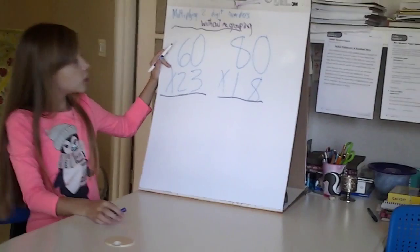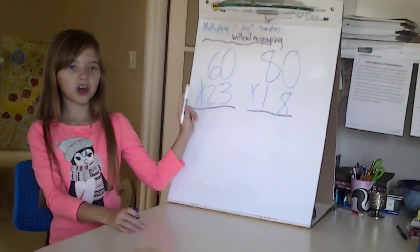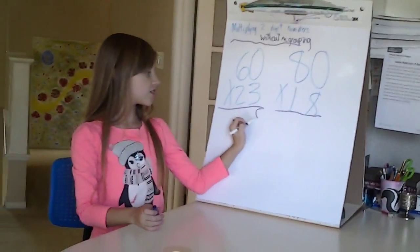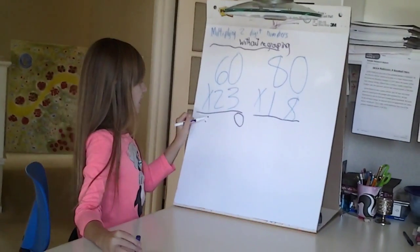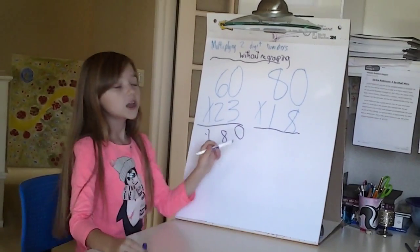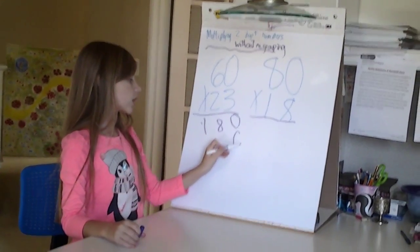First, in 16 times 23, you do 0 times 3, which is 0. Then you do 6 times 3, which is 18. Then you drop a 0 under that extra 0.